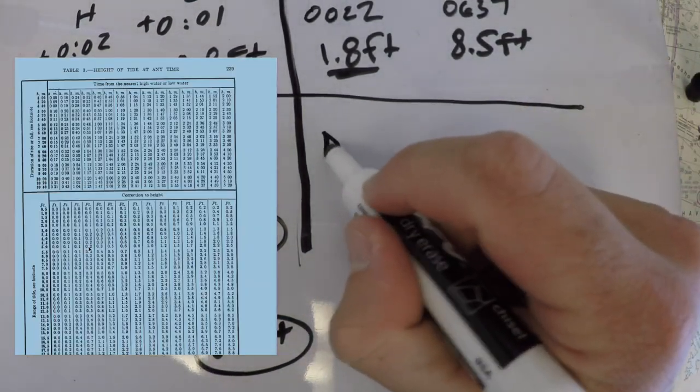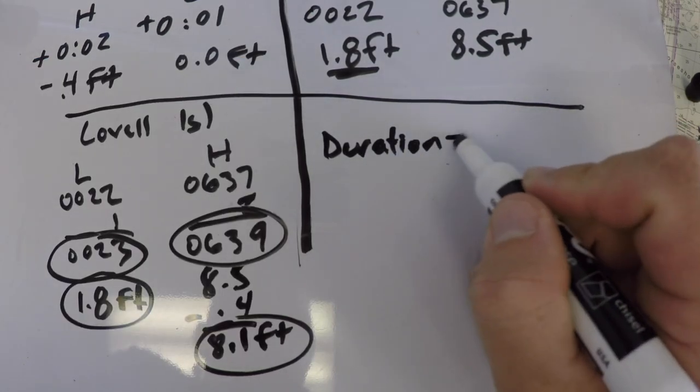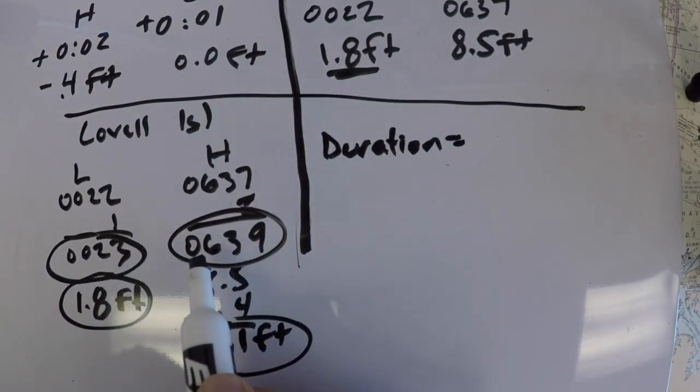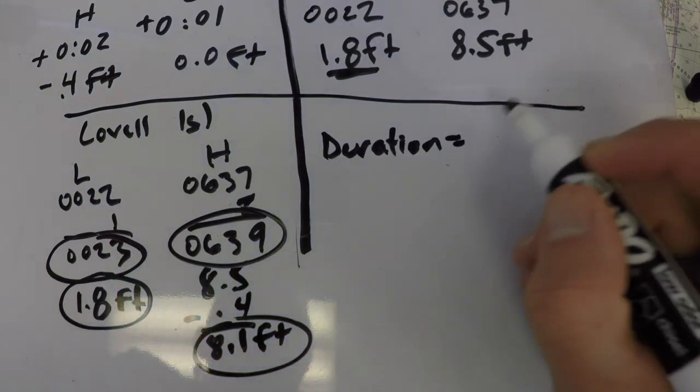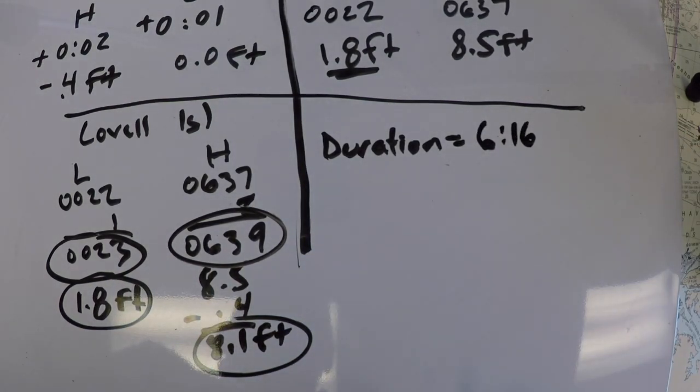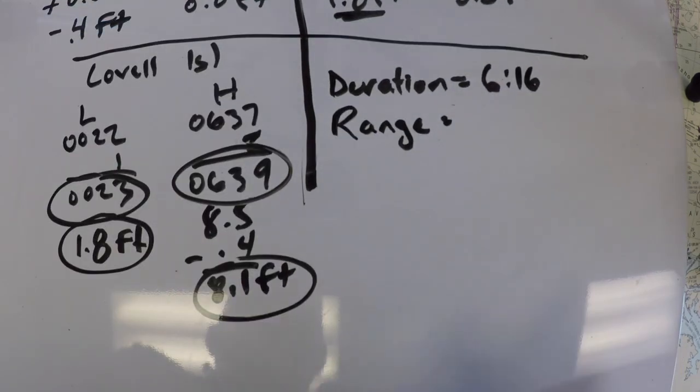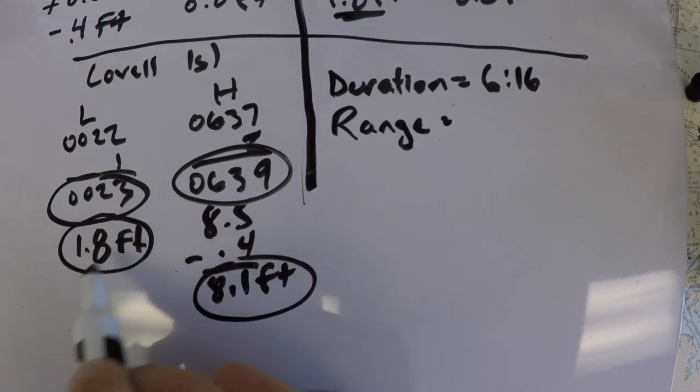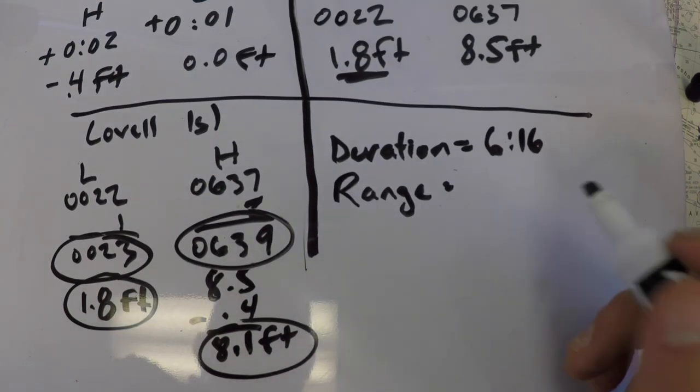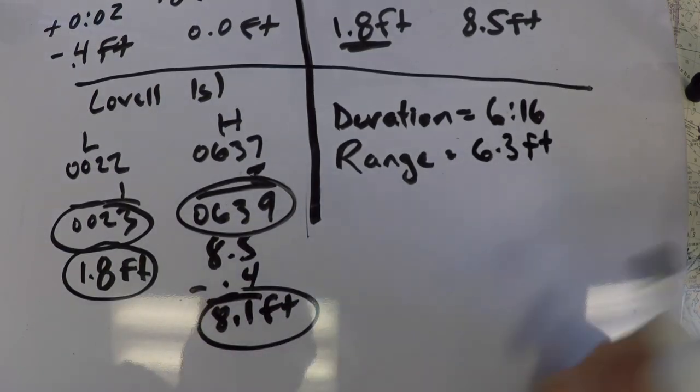And so if we kind of compare these two times here, 639 minus 23 minutes is 6 hours and 16 minutes for the duration of rise and fall. For the range of tide, that's going to be 8.1 feet minus 1.8 feet, or in other words, 6.3 feet.